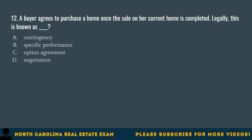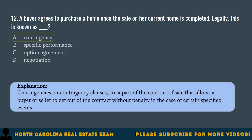Question 12. A buyer agrees to purchase a home once the sale on her current home is completed. Legally, this is known as A. Contingency. B. Specific performance. C. Option agreement. D. Negotiation. The correct answer is A. Contingency. Contingencies or contingency clauses are a part of the contract of sale that allows a buyer or seller to get out of the contract without penalty in the case of certain specified events.